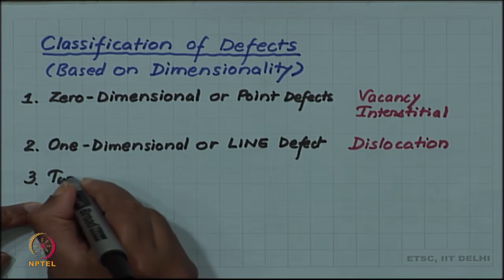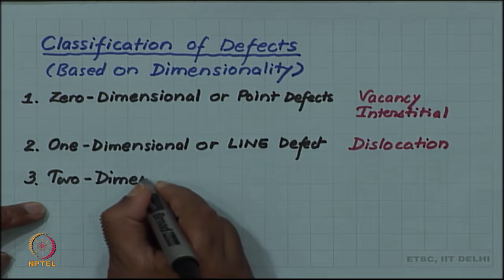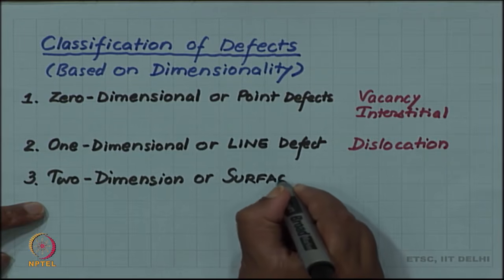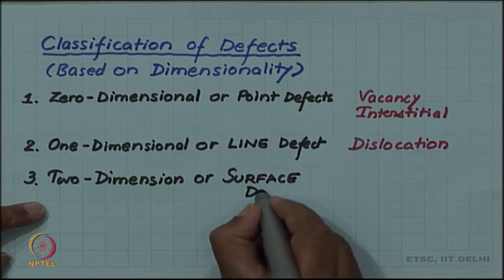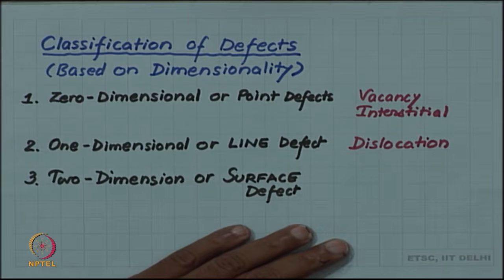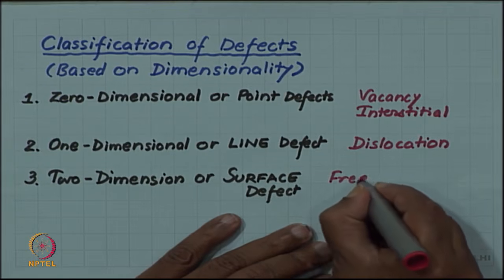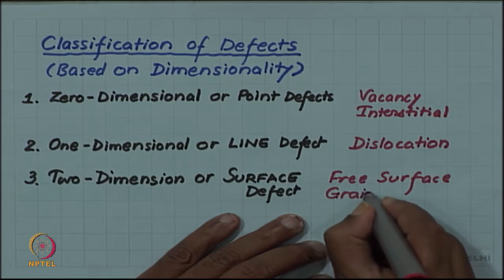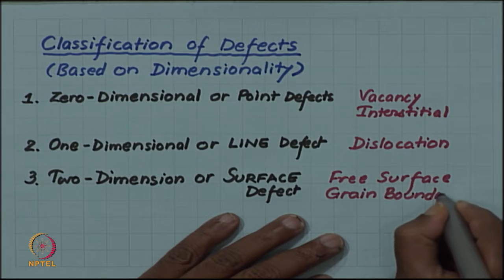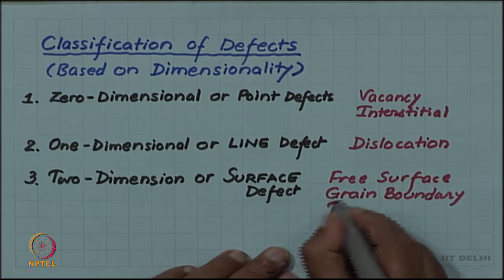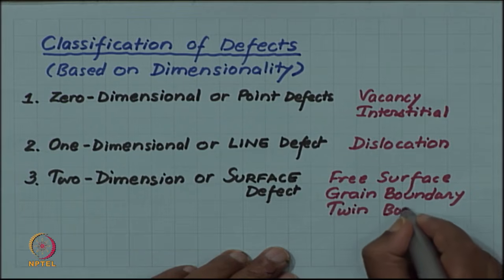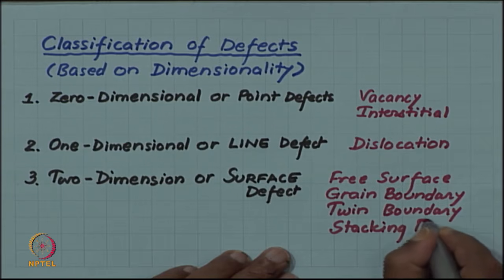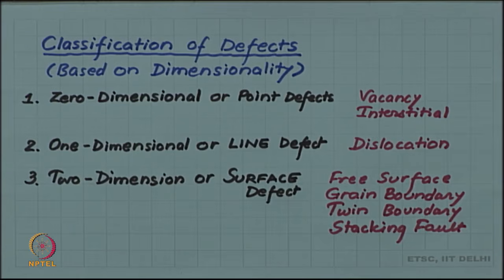We can have two-dimensional or surface defect. Some examples will be free surface, grain boundary, twin boundary, stacking fault. All these are examples of surface defect.